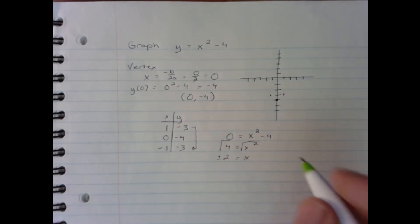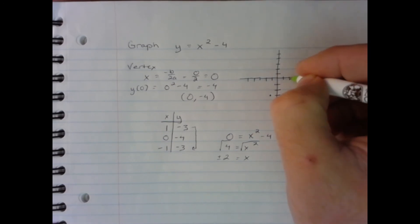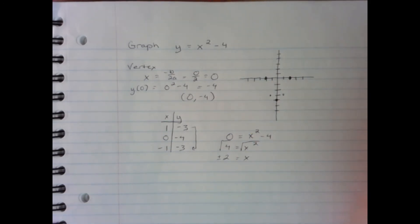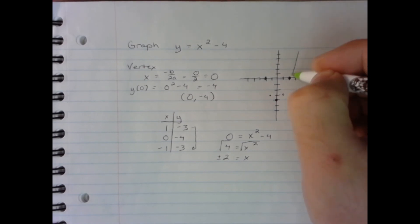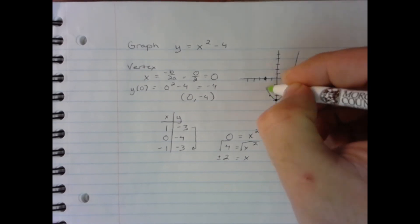So we intercept the x-axis at positive 2 and negative 2. And there's 5 points to give us a rough estimate of what this function looks like.